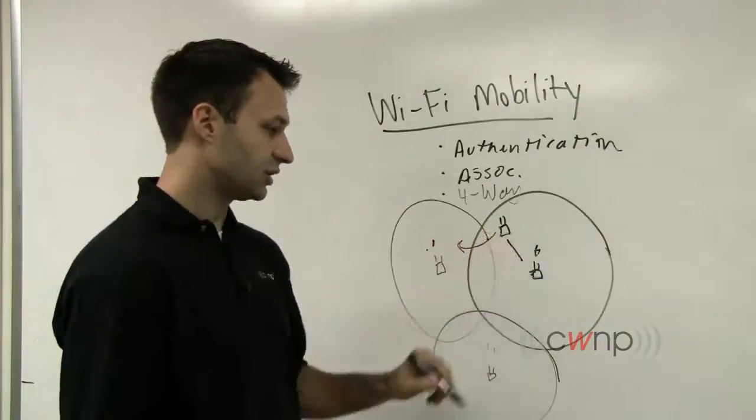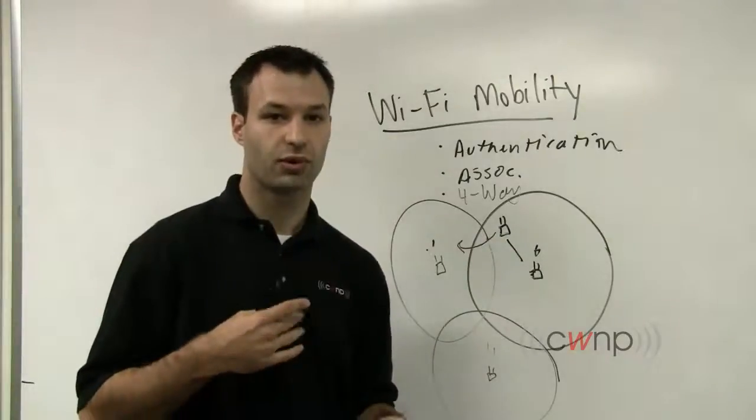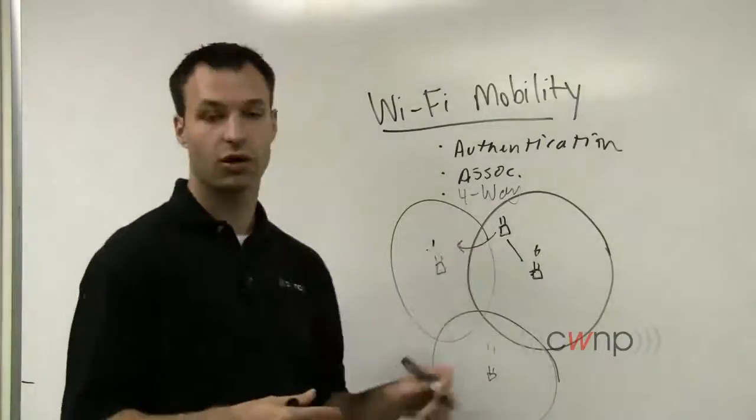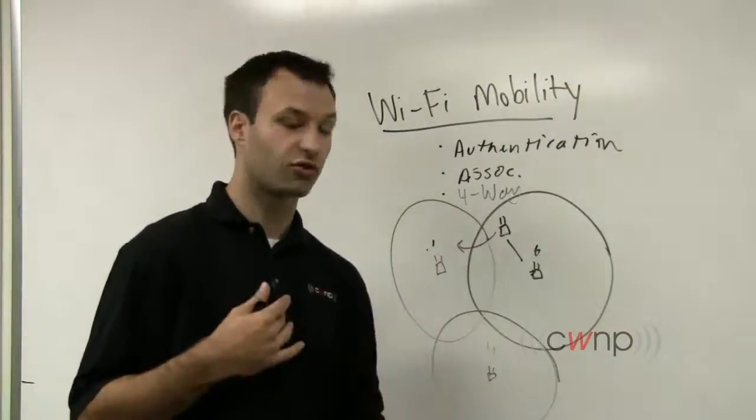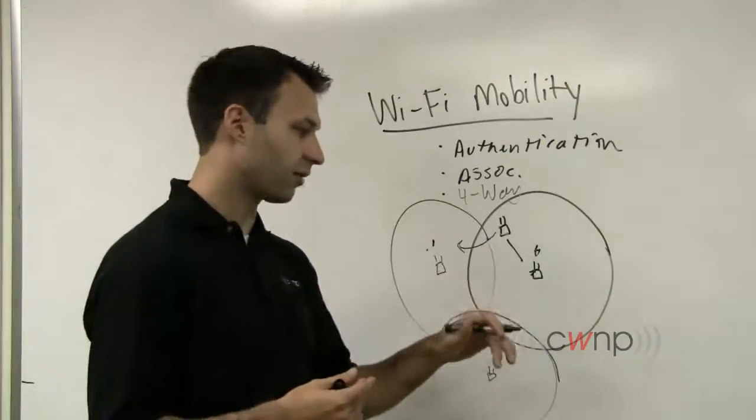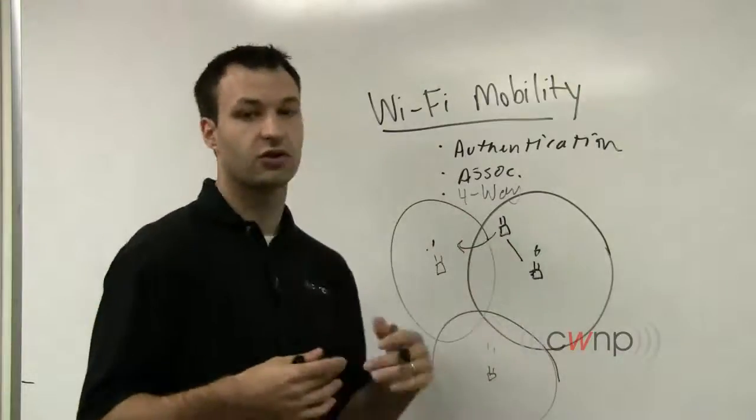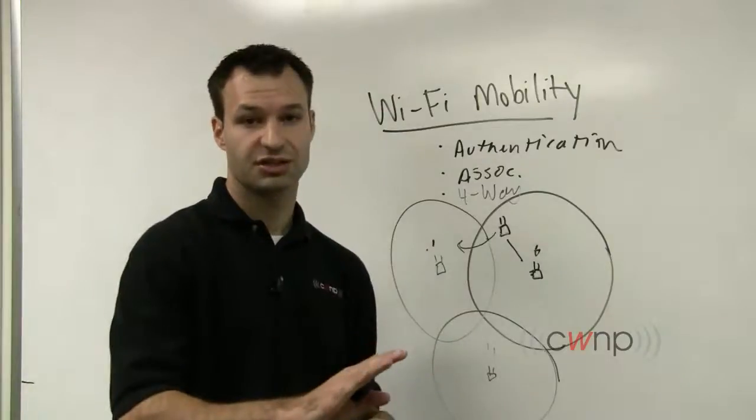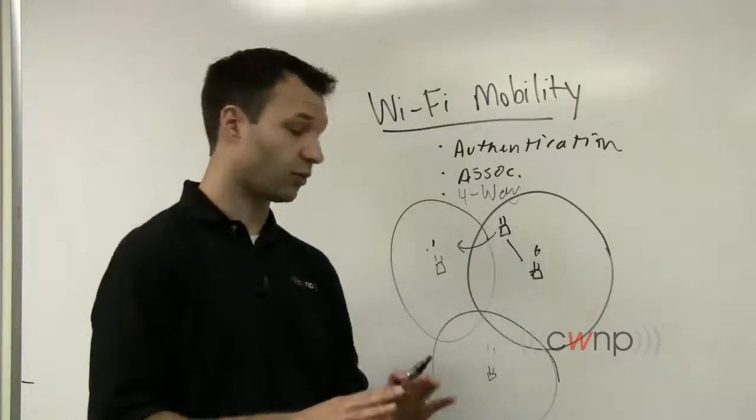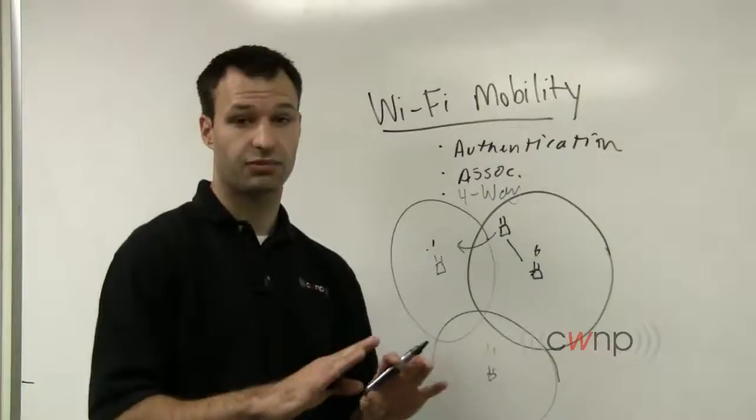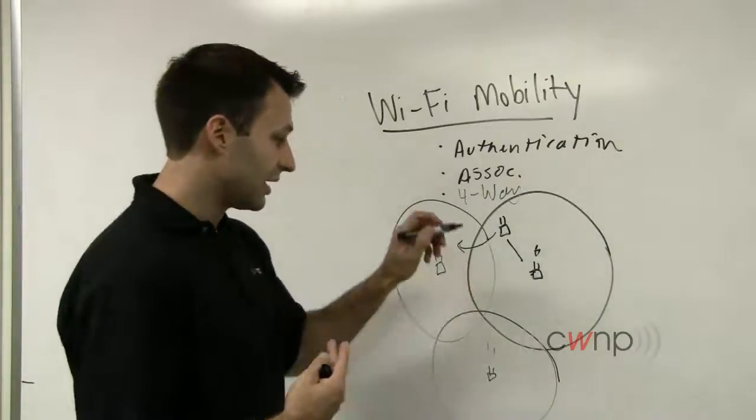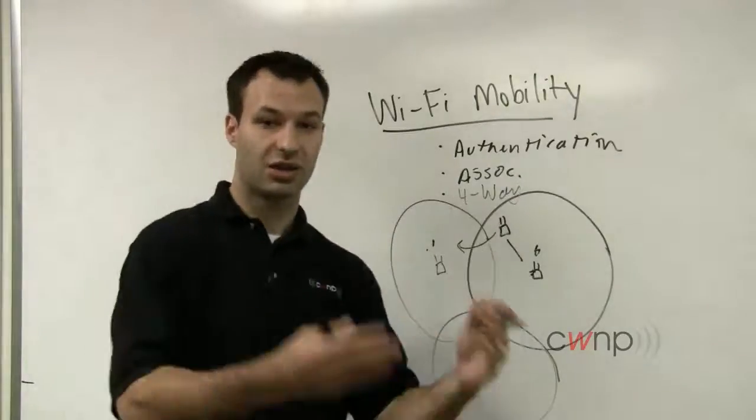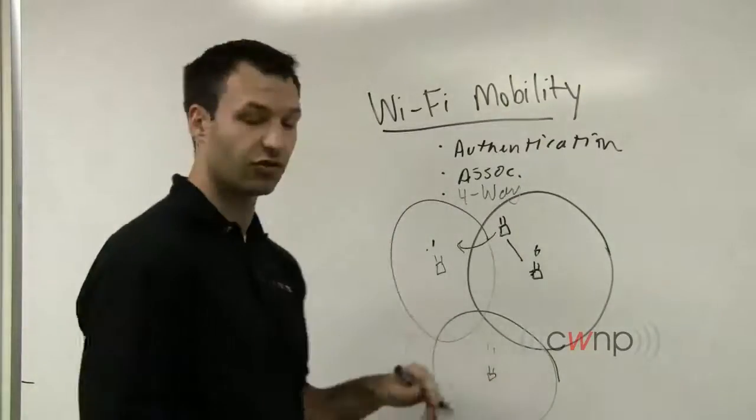So it's communicating here on channel six with this access point. Its data flow is going, let's just call it a voice over Wi-Fi call. So you've got a phone call that's going on here. The user is mobile throughout this environment. They move into the service area of a new access point. When this client decides that it's time to roam, application data flow stops. So your voice over Wi-Fi call at that point stops. You're no longer passing frames until you've gone through all of these steps and can now begin passing frames through the new access point on the new channel.